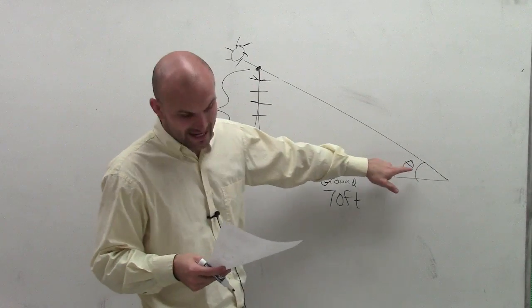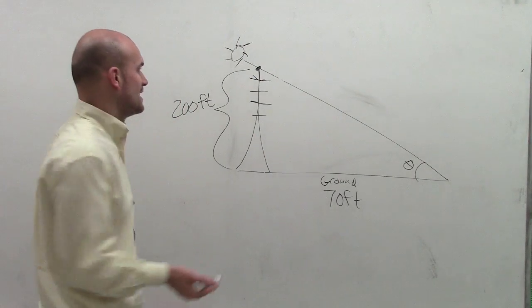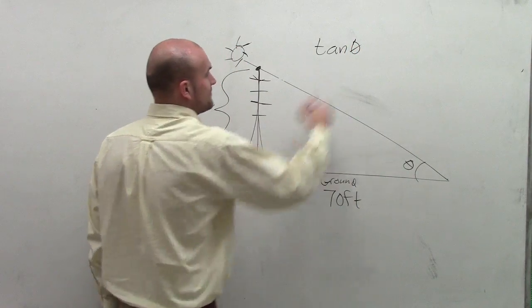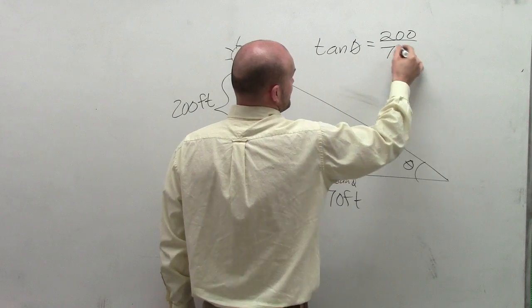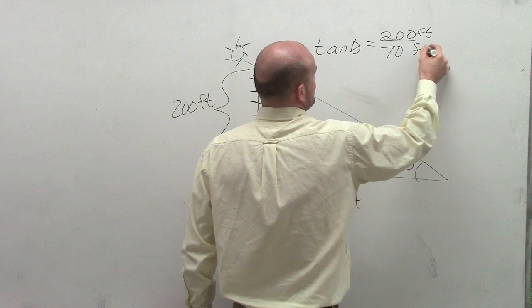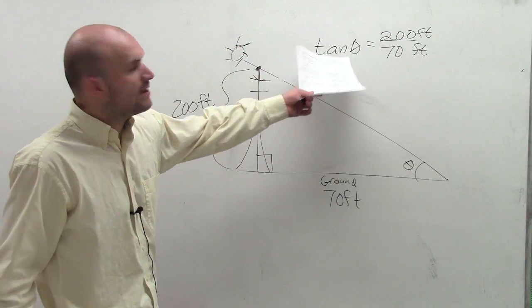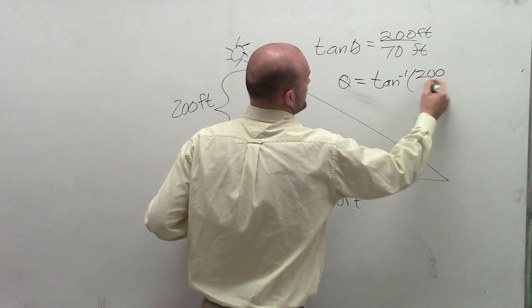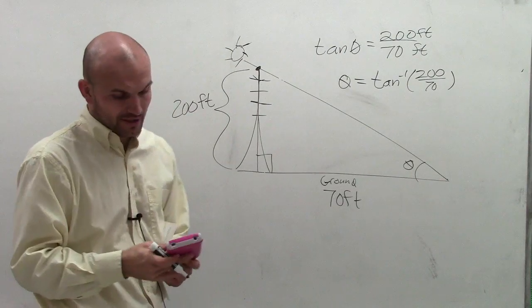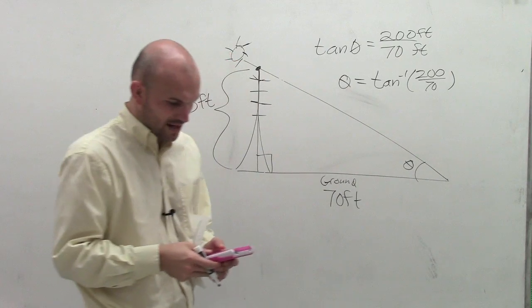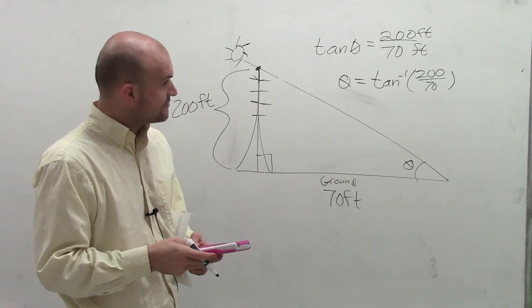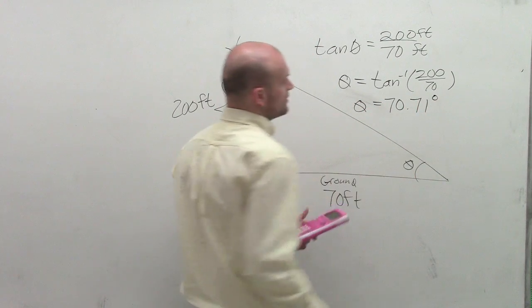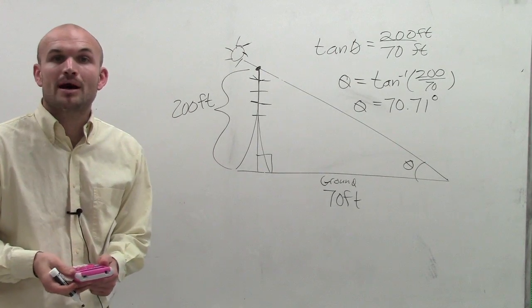Now we're going to find this angle of elevation. By using right triangle trigonometry, the tower and shadow create a right triangle. We can say that the tangent of angle theta equals 200 divided by 70 — that's 200 feet divided by 70 feet, and the feet cancel. To figure out what theta is, I take theta equals the inverse tangent of 200 over 70. I take my calculator, make sure I'm in degree mode, and take the inverse tangent of 200 divided by 70. Therefore, theta equals 70.71 degrees. That's how you solve a simple word problem with angle of elevation.